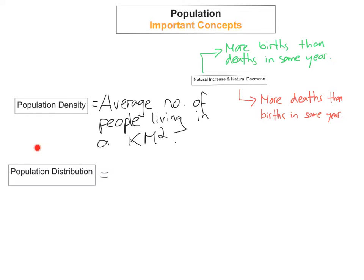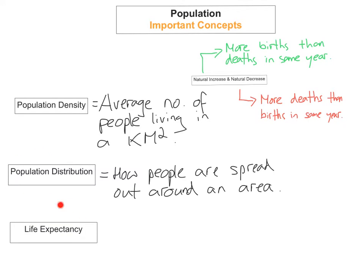Another concept is population distribution, which is how people are spread out or dispersed around an area. Life expectancy is the average age that people will live in a country. An example would be Ireland, and Ireland's life expectancy at the moment is 76 years of age.